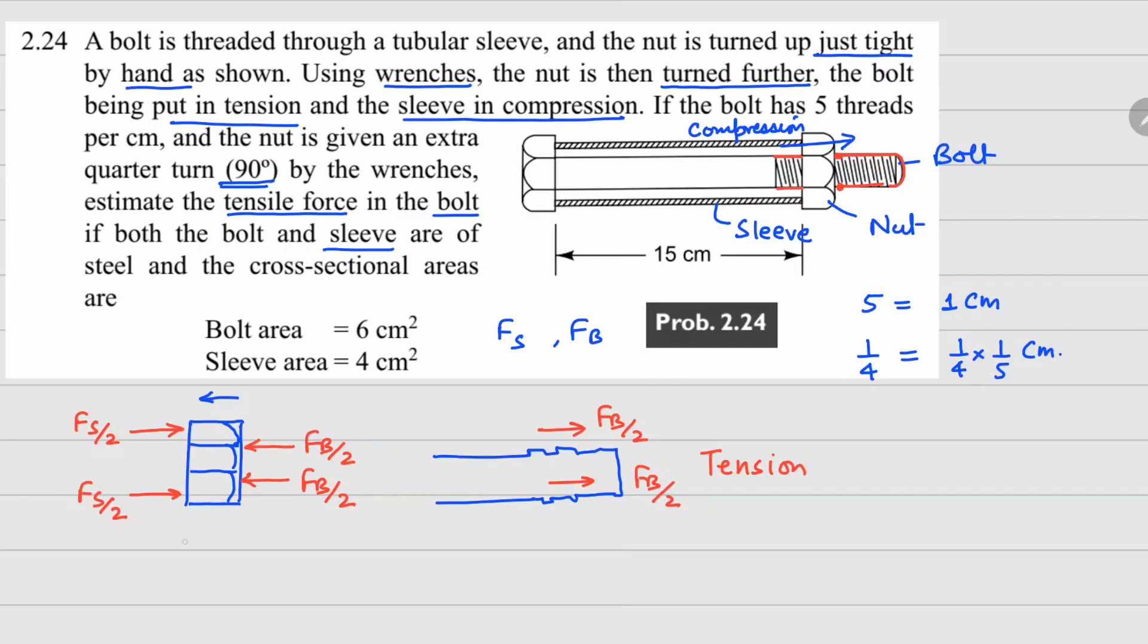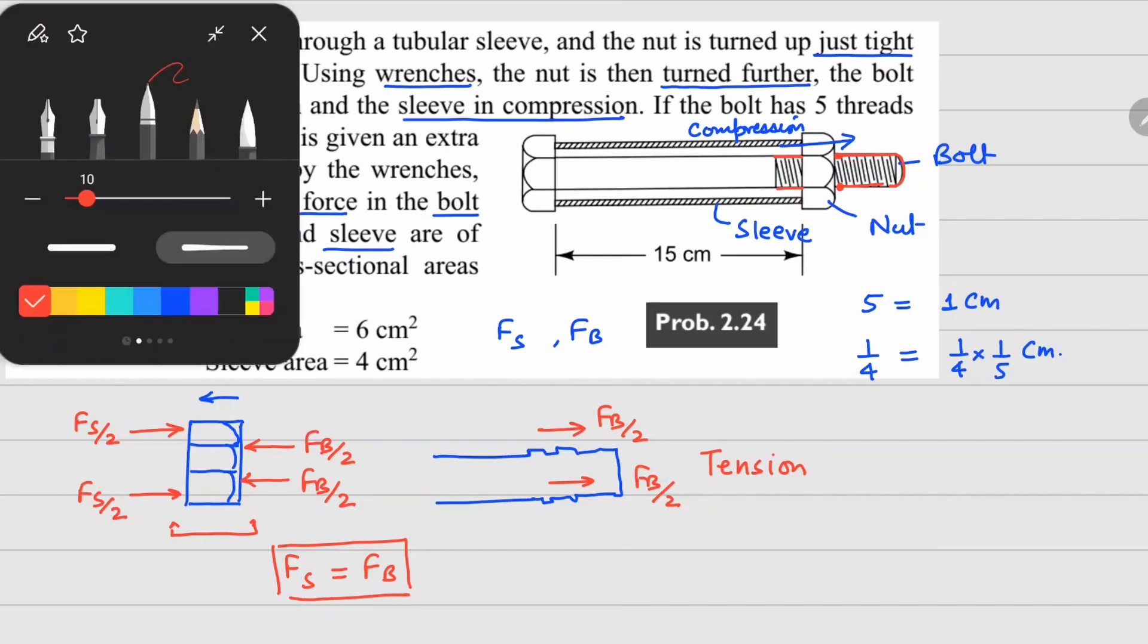From this free body diagram, you can see the total force in the sleeve has to equal the total force in your bolt. So that's the first condition we need to understand.